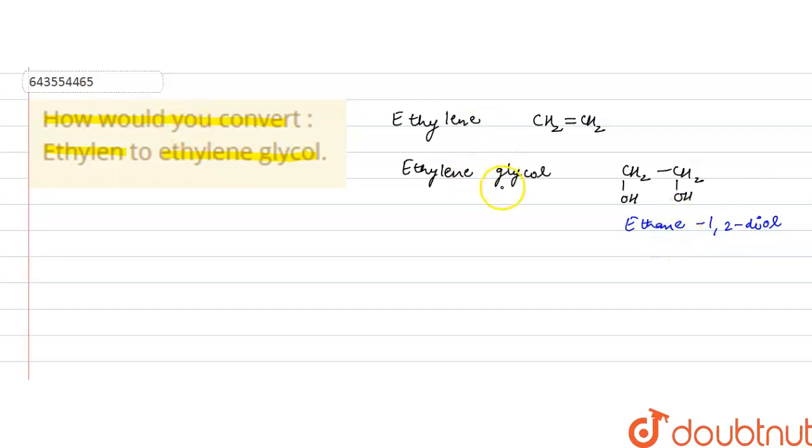So we have to convert ethylene to ethylene glycol. It means by oxidation reaction, by oxidation using KMnO4 that is potassium permanganate, we can convert ethylene to ethylene glycol. Using KMnO4, alkaline KMnO4, it will be converted to diol because it is alkaline KMnO4, this is an oxidizing agent.